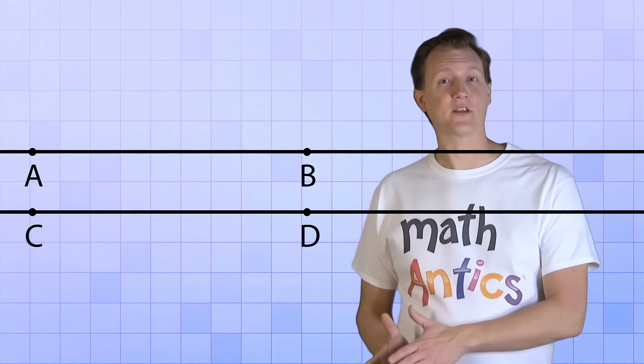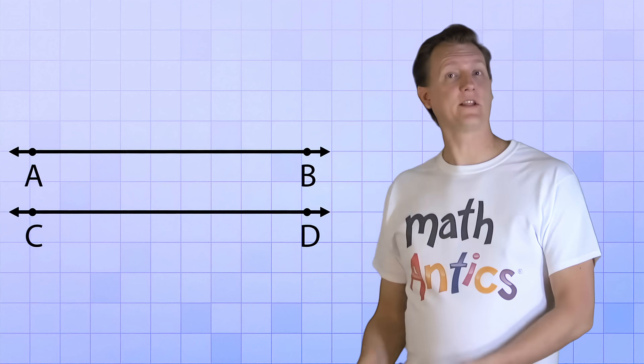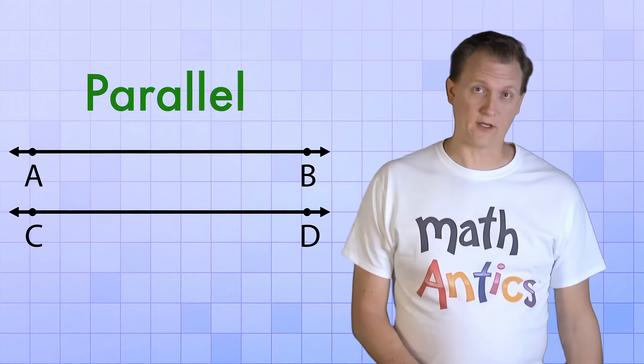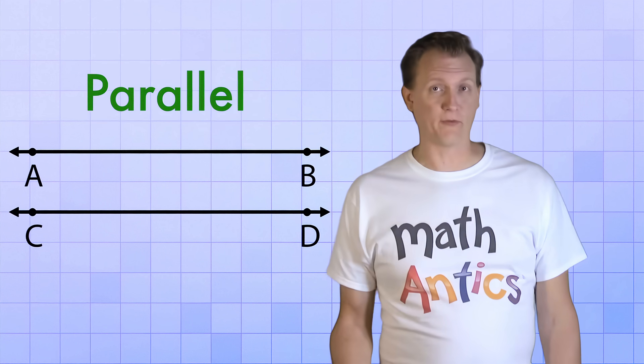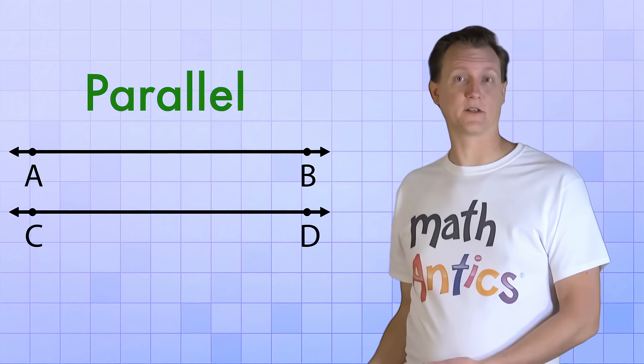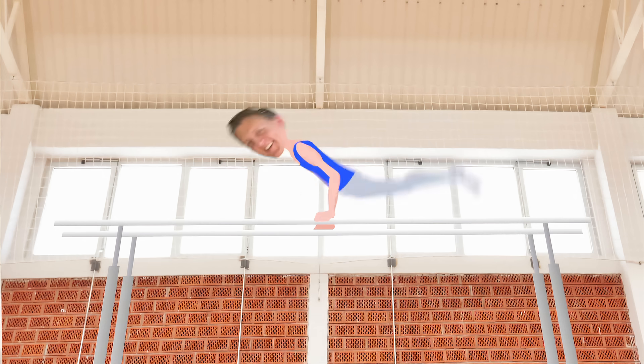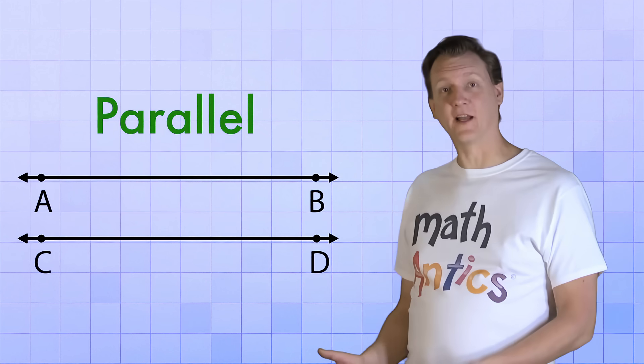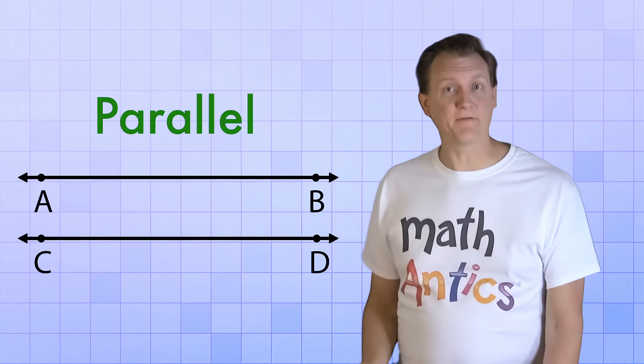they would never cross or even get closer together. When two lines are arranged like this, we call them parallel. You've probably heard the term parallel before, like parallel parking or a parallel universe or parallel bars. So parallel lines are lines that will never cross, even if they go on forever.